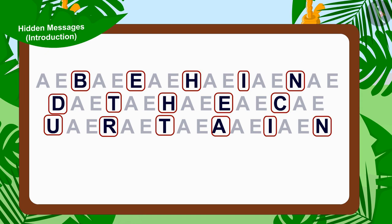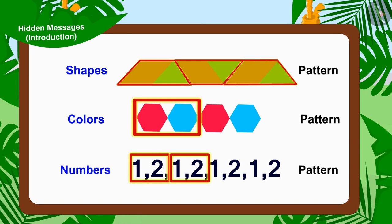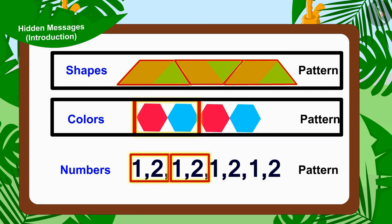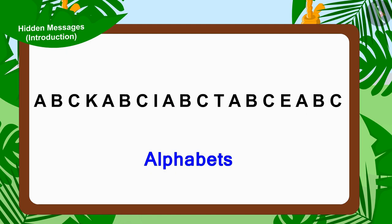Children, now did you understand the clue written in Appu's letter? Absolutely right. The clue is behind the curtain. The way we saw patterns made of shapes, colors and numbers — in the same way, we can hide various interesting messages by using alphabets.